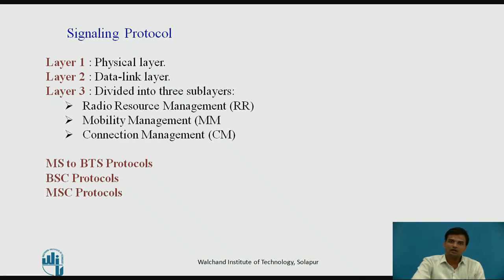Layer 1 is the physical layer, which uses the channel structures over the air interface. Layer 2 is the data link layer. Across the UM interface, the data link layer is a modified version of the Link Access Protocol for the D channel (LAPDm) used in ISDN. Across the A interface, a Message Transfer Part Layer 2 of SS7 is used. Layer 3 of the GSM signaling protocol is divided into three sublayers: Radio Resource Management (RR), Mobility Management (MM), and Connection Management (CM).